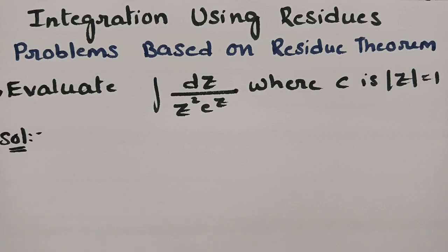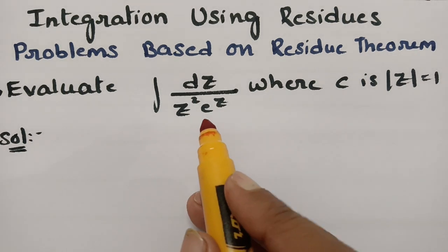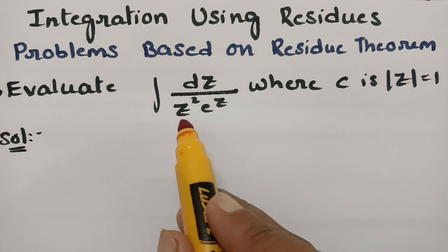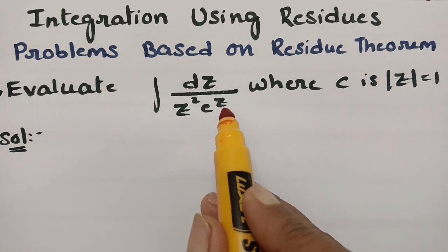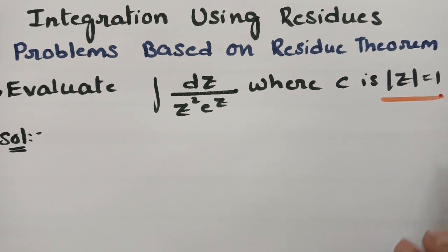This video is on integration using residues. In today's video, we are going to solve a problem using the residue theorem. We are going to evaluate the integral dz divided by z-squared times e to the z, where C is the contour |z| = 1.